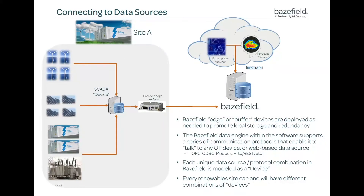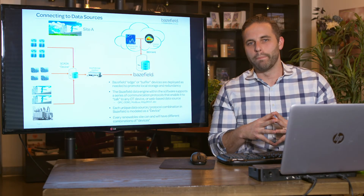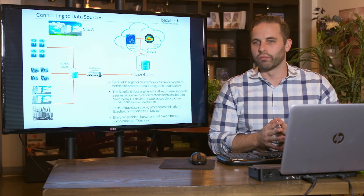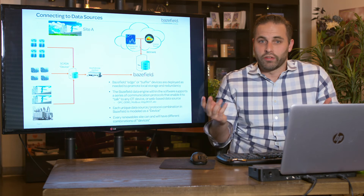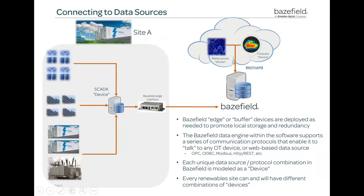In a traditional sense, we have what we call an edge device or buffer installed on site, either with our own hardware or Windows hardware you already have. That device will have different protocols — OPC, ODBC, Modbus, HTTP or REST — many common protocols that different systems use. This allows us to talk to meters, substations, inverters, and turbines. These devices also allow us to connect to web-based data: merchant pricing, ISO data, weather forecast data. All of these are modeled in Basefield as devices — essentially just data sources. We set up those devices in Basefield and then connect to the data.